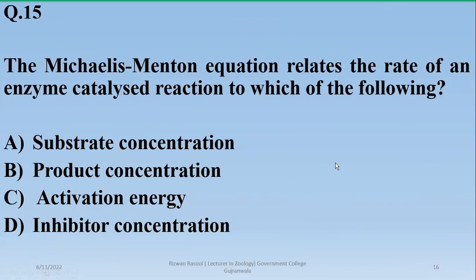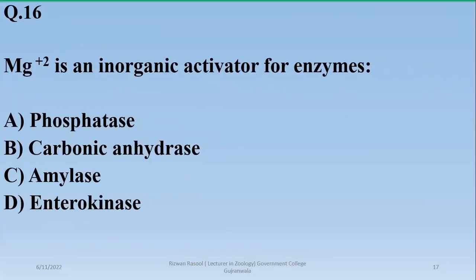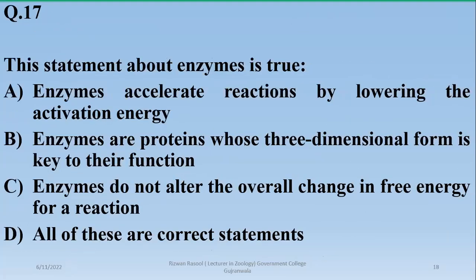Number fifteen: the Michaelis-Menten equation relates the rate of an enzyme-catalyzed reaction to substrate concentration — so alpha is correct. Number sixteen: Magnesium is an inorganic activator for enzymes such as phosphatase, hexokinase, and pyruvate kinase.